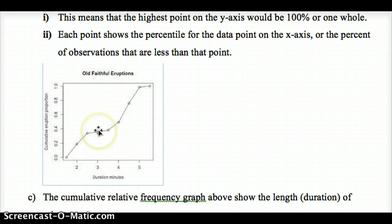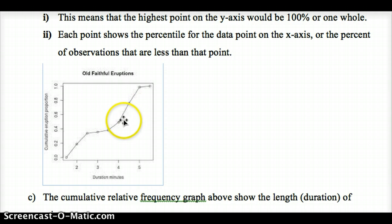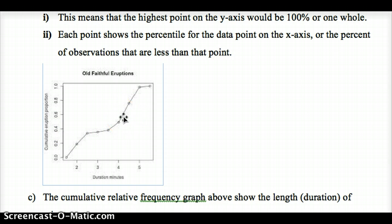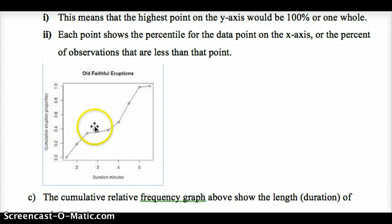Where we get a higher slope, between 4 and 4.5 minutes, that means we have a good amount of data there. The slope tells us where a lot of our data lies — if it flattens out completely, there are no data points in that interval. If it becomes a tall slope, there's quite a bit of data. 'Cumulative' means it adds up; 'relative frequency' means percents — what percent of the data is below a given point.